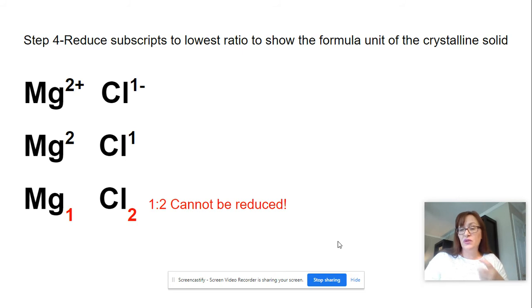Step 4, we want to reduce those subscripts. So a 1 and a 2, we can't reduce that ratio any lower, but we're writing a formula unit for a great big crystalline solid, and so we just want to represent the lowest ratio of the possible ions. If you can't reduce, then you can't reduce.